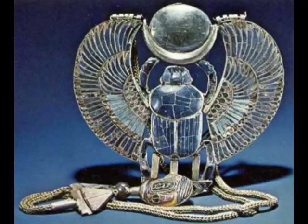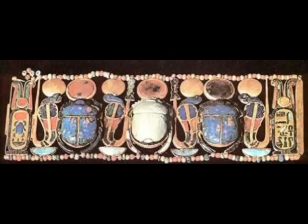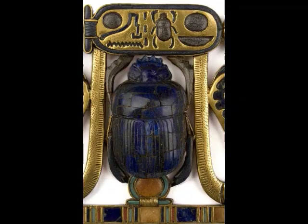When Ra became the preeminent sun god, Khepri continued in this role as an assistant. Scarabs became popular amulets during the first intermediate period, 2181–2040 BCE, and remained so for the duration of Egypt's history until the rise of Christianity.